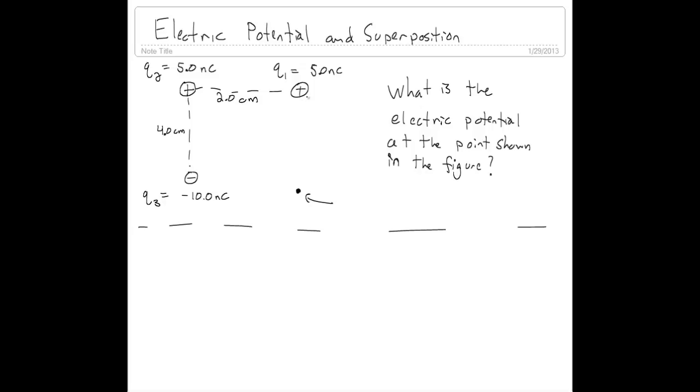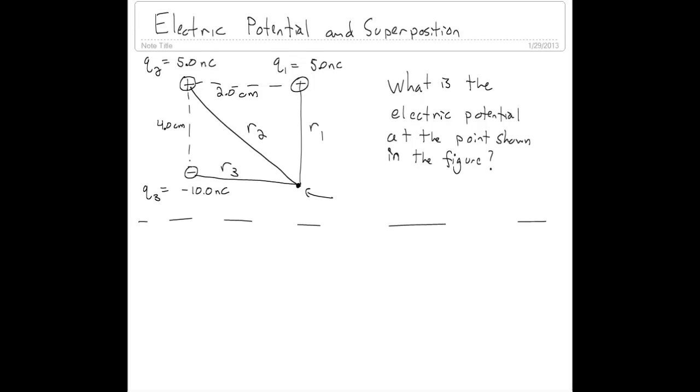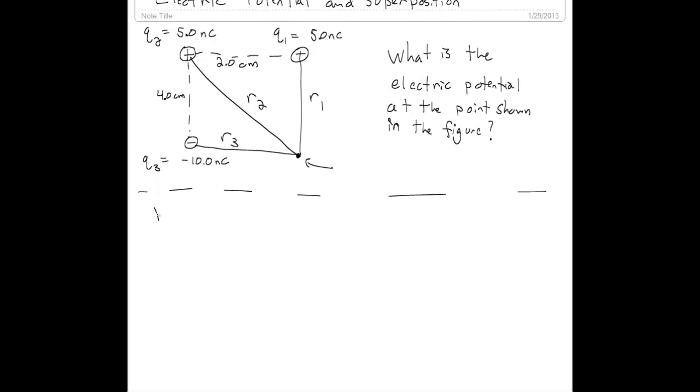Some other things we'd like to label are the distances from each charge to the point. We'll call the distance from Q1 to the point R1, from Q2 to the point R2, and from Q3 to the point R3. Now that we've labeled things, we don't really need to redraw our picture.